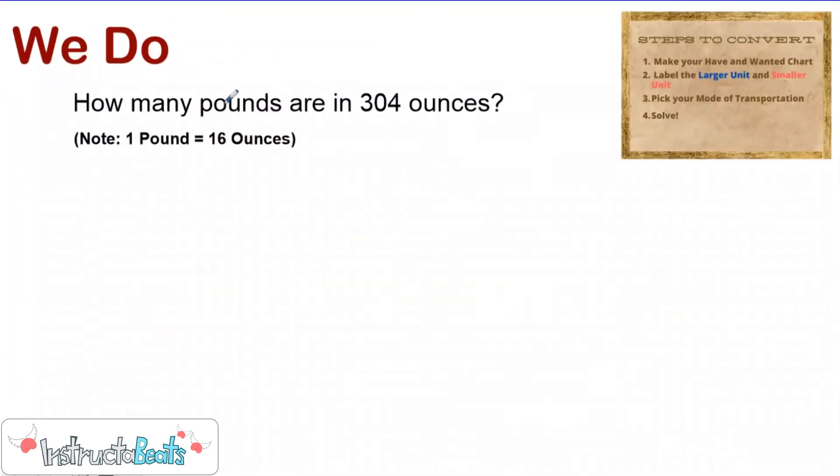All right. So here we have our We Do problem. Go ahead and make sure you're pausing the video as we go through this to write this one down in your notes. It's always important to have an exemplar to look at as you begin to try things later by yourself. So our question here says, how many pounds are in 304 ounces? And again, you may have to know that by yourself. You might have to draw a pound guy or whatever way that you remember that 16 ounces are in one pound. I went ahead and just gave us this note because this lesson is really about making our have and wanted chart and then picking our Lexus or saddle.